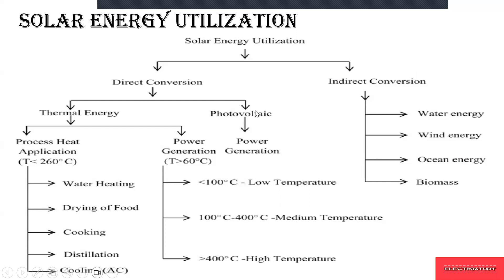From photovoltaic you have power generation. From thermal energy you have process heating applications — how heat is produced from particular devices and how it can be used for different applications. In thermal energy, process heat applications where the temperature is less than 200 degrees Celsius are used for drying of food, cooking, cooling or AC cooling, and water heating. If you want to generate power through thermal energy, the temperature must be greater than 60 degrees Celsius. The temperature is classified as low, medium, and high, and based on that the power is generated by thermal energy.